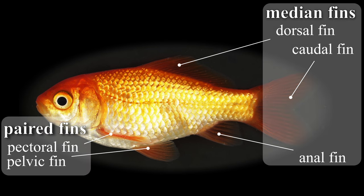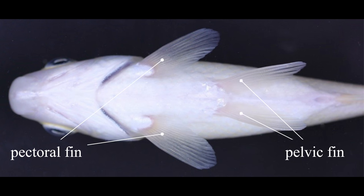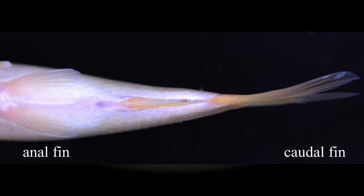Median and paired fins are significantly different in how they are located on the body. Looking at the fish body from the ventral side, the pectoral and pelvic fins are located on the lateral and ventrolateral sides of the body respectively, while all of the median fins are located on the sagittal plane.